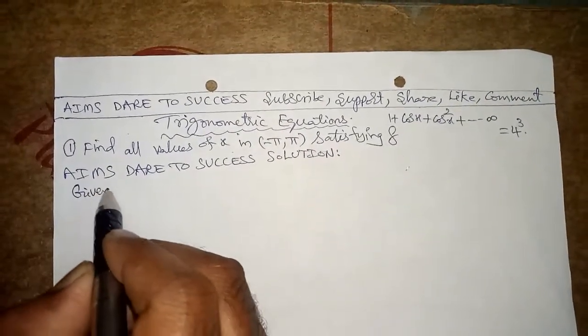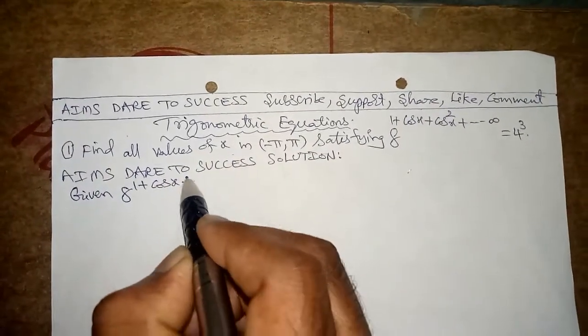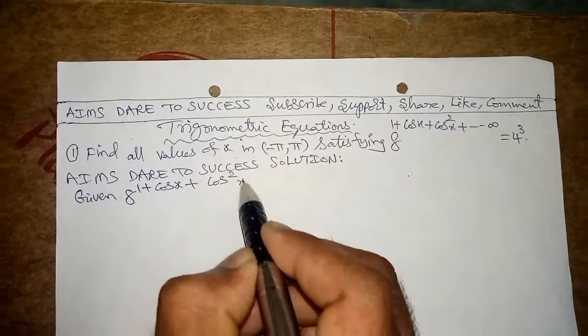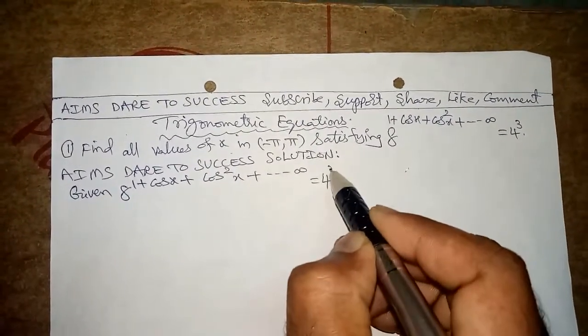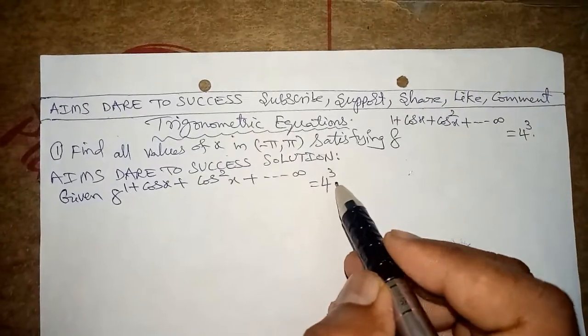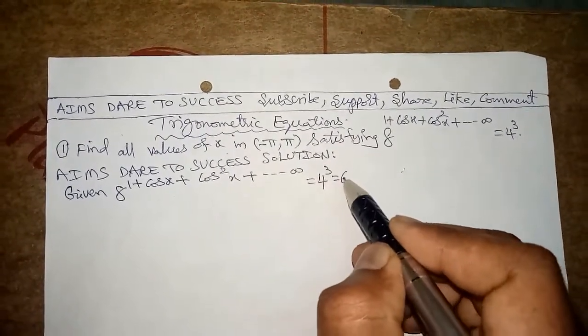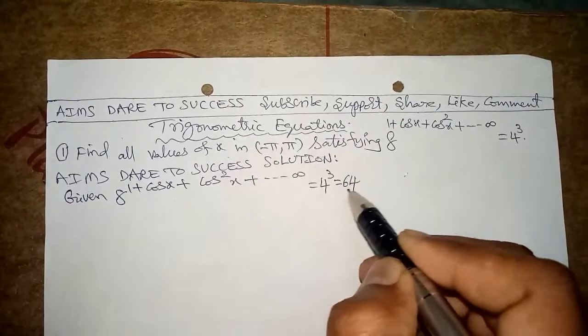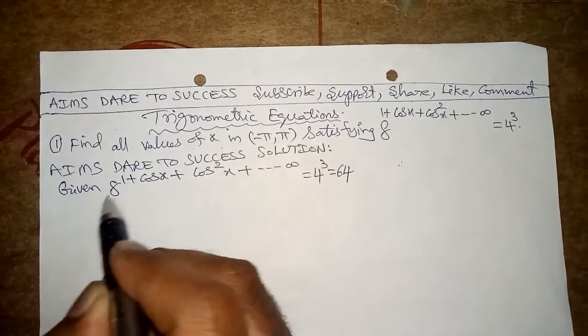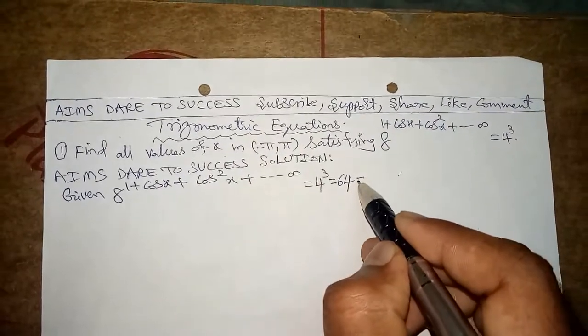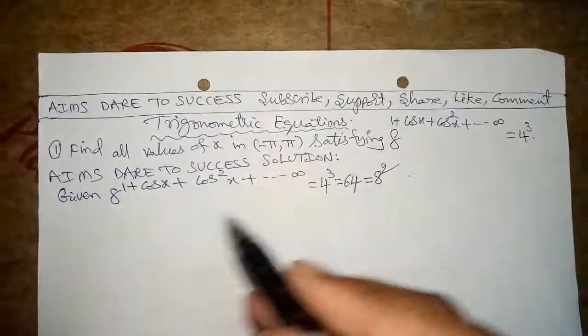...8^(1 + cos x + cos²x + ...) = 4³. Now 4³ equals 4 times 4 equals 16, 16 times 4 equals 64. So this is 64. You can see in left side base value is 8, so related to base value, 64 is 8². So here one small school standard formula: if bases are equal then powers also equal.